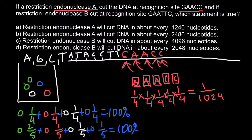Let's check our answers. Answer A: restriction endonuclease A will cut DNA about every 1240 nucleotides — this is close but not the correct answer. Answer B: restriction endonuclease A will cut DNA about every 2480 nucleotides — this is also incorrect. So we have to cross out these two answers.